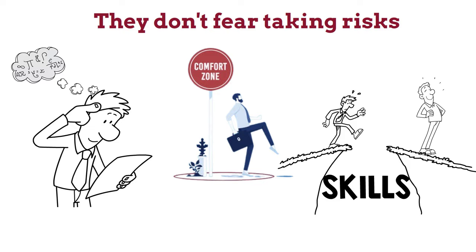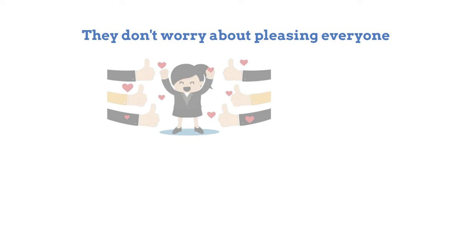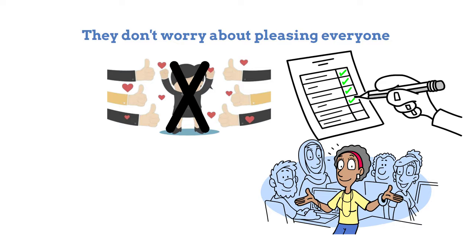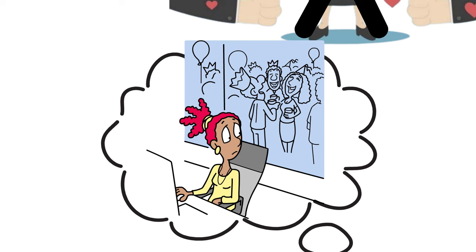Four: They don't worry about pleasing everyone. It's impossible to please everyone, and mentally strong individuals prioritize their own needs and values above seeking approval from others. Reflect on a time when you compromised your beliefs to fit in. How did it make you feel, and what did you learn from that experience?